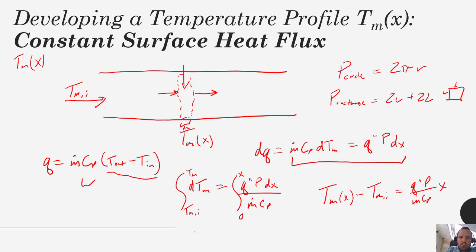Solving for t_m as a function of x, we are going to get that this equals the inlet temperature plus q double prime times p over m dot cp times x.